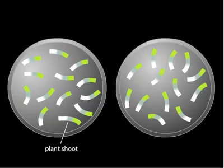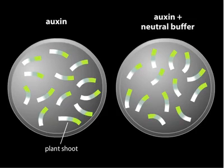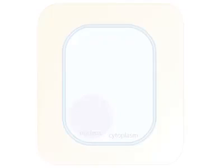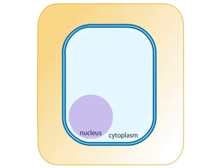Consider an experiment in which you add auxin to shoots. Half of the shoots tested are also incubated in a buffer that prevents the cell walls from becoming acidic. What do you think will happen to each set of shoots? When a buffer is used to prevent the wall from becoming acidic, auxin-induced cell expansion is blocked. The buffer-treated shoots do not elongate.